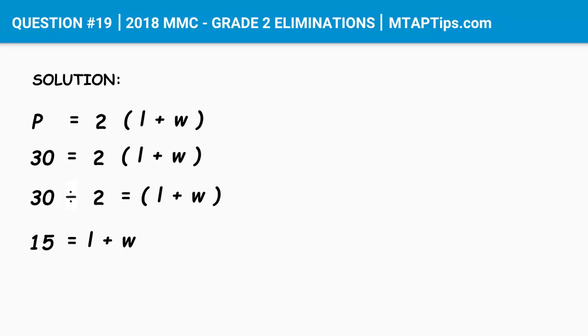And remember, the question was how many rectangles with different shapes satisfy these conditions? So with this equation that we got, which is 15 equals length plus width, we'll just have to think of a combination of 2 numbers that will have a sum of 15. And those 2 numbers will be the length and width, and they should be a whole number.